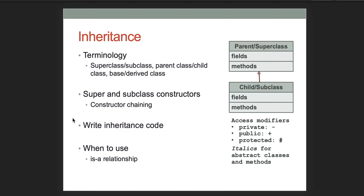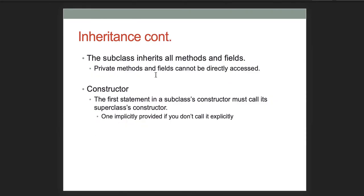Terminology to know: superclass, subclass, parent class, child class, base, and derived class — we use all these interchangeably. You need to know about constructor chaining, where the subclass must call a constructor in the parent class. Make sure you can write code using inheritance and know when to use an 'is-a' relationship. Remember that the subclass inherits all methods and fields; it does inherit private ones but cannot directly access them — only public and protected things can be accessed by the child. The first statement in every subclass constructor must call the superclass constructor, except if you intend to call the no-parameter constructor, which is called implicitly.